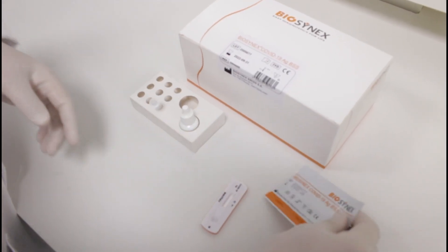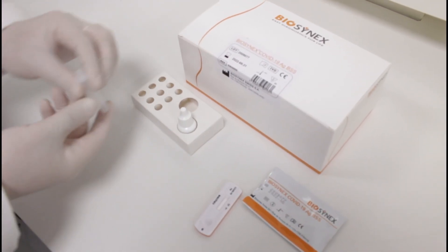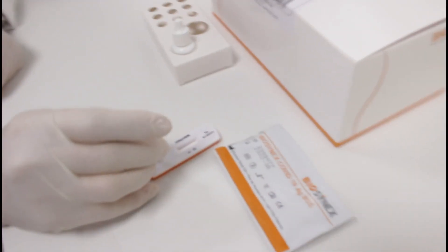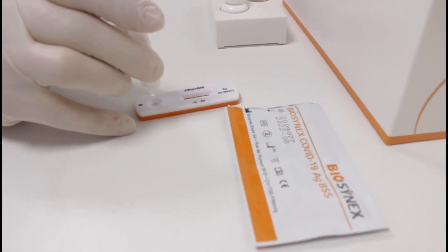Remove the test cassette from its pouch and place it on a flat and clean surface. Take the extracted sample and place 4 drops into the S-well on the test cassette.